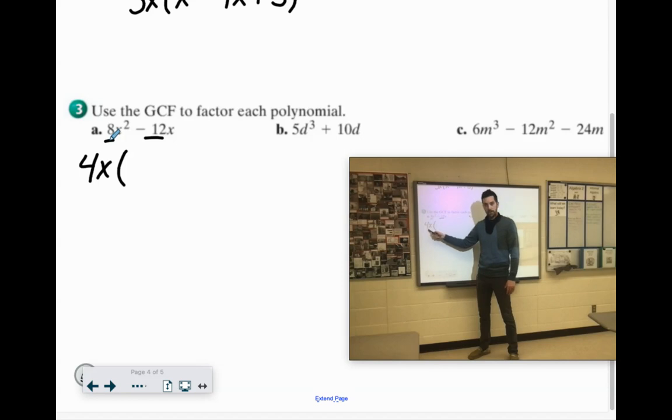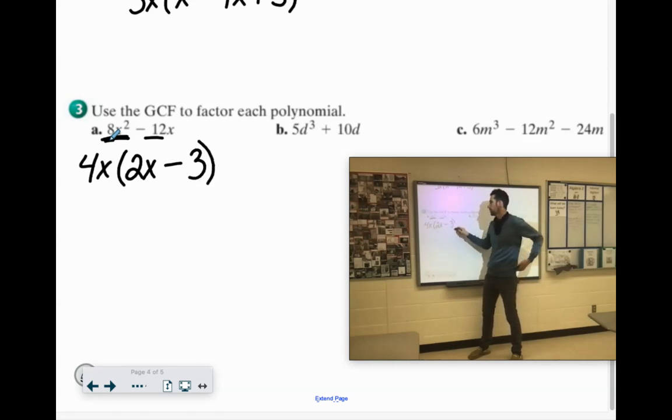So 4x times what would give me 8x squared? Well, 4 times 2 is 8, and x times x would give me x squared. All right. For now, the negative 12x. 4 times what would give me negative 12x? Negative 3. And x. We don't need any more x's. So this would be our final answer.